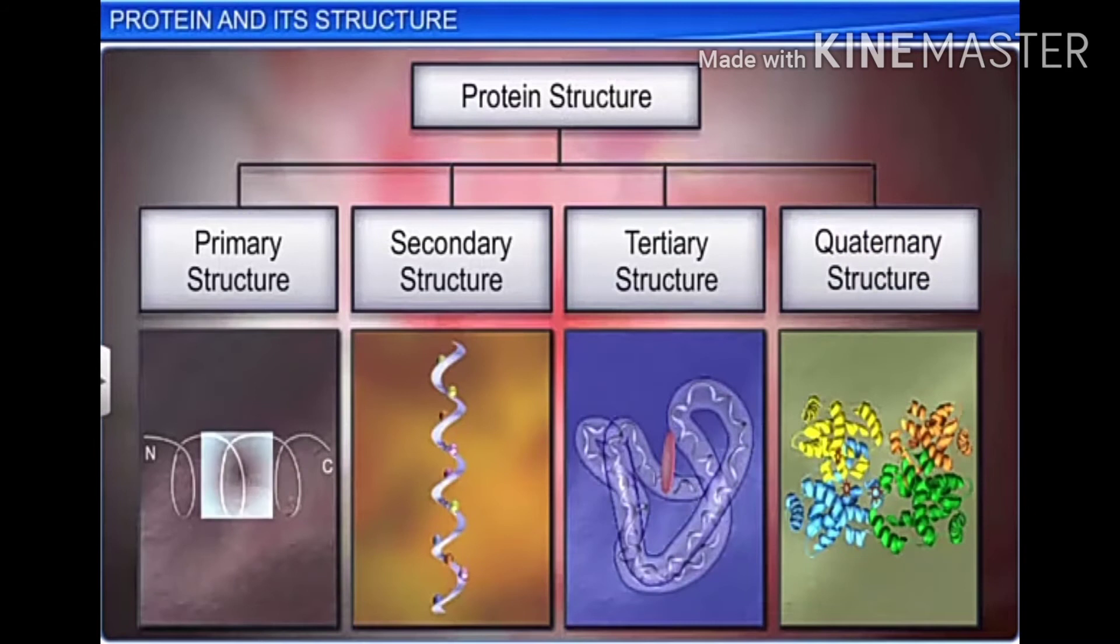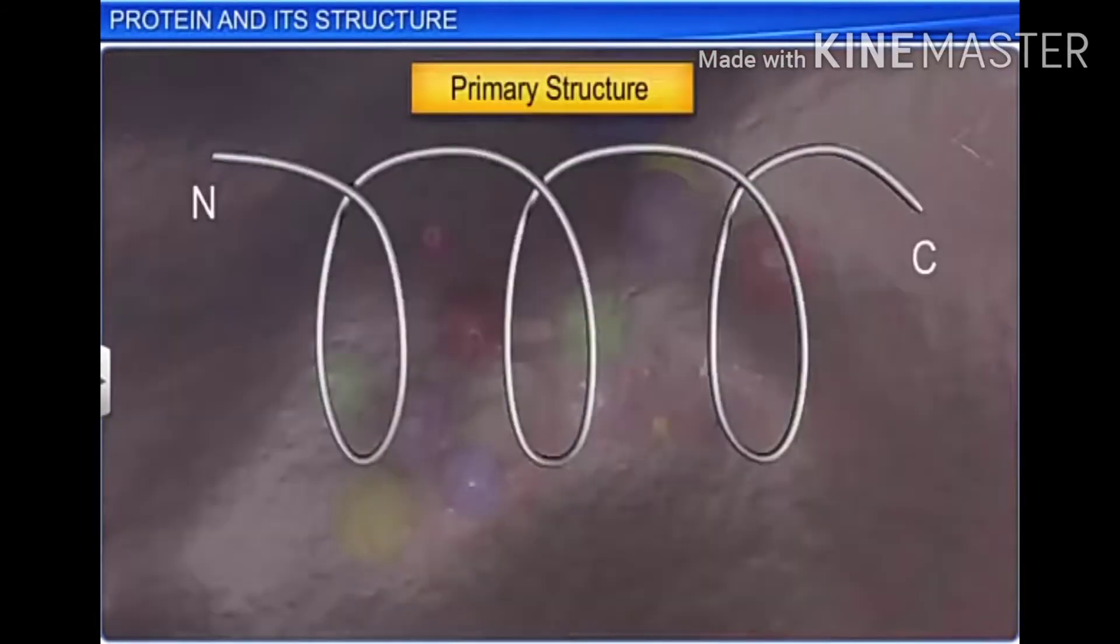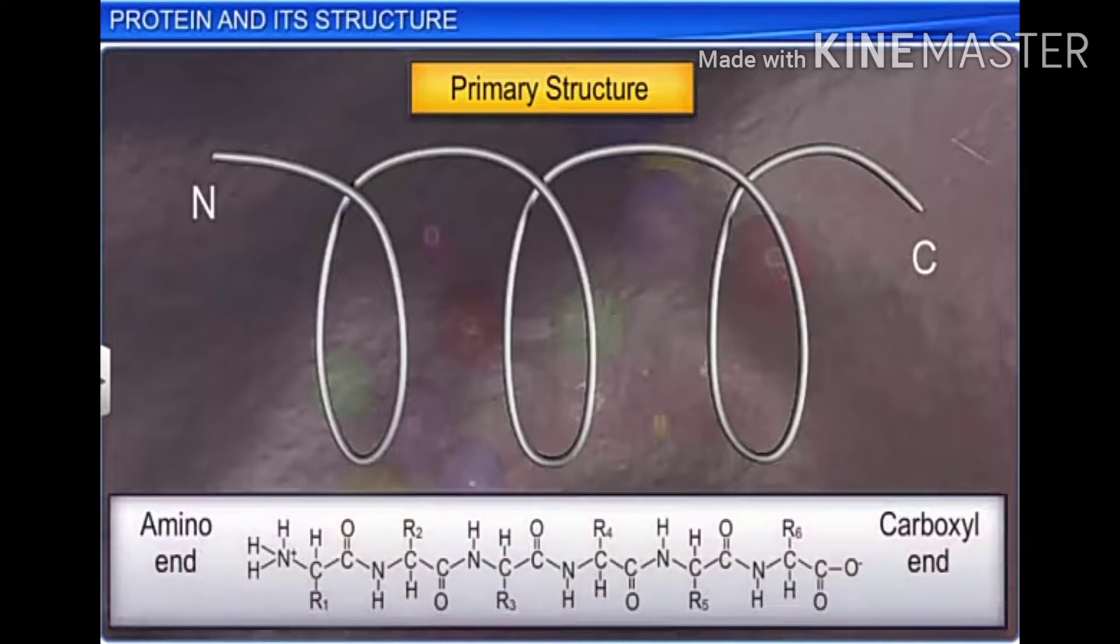The primary structure is the simplest structure which refers to the positional information of amino acids in a protein. Hypothetically, a protein is a thread formed by amino acids where the left end is represented by the first amino acid or the N-terminal amino acid, and the right end is represented by the last amino acid or the C-terminal amino acid.